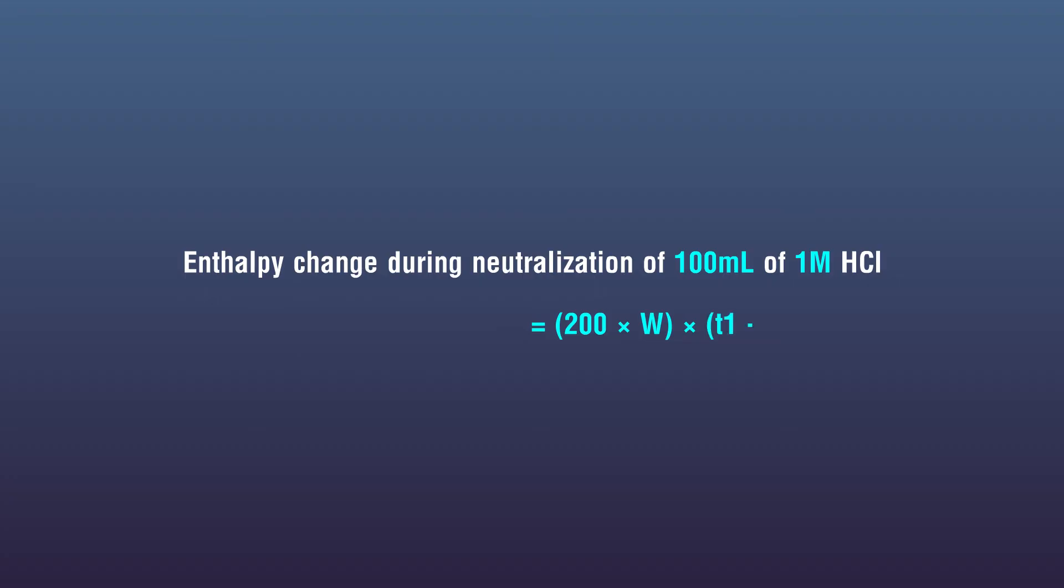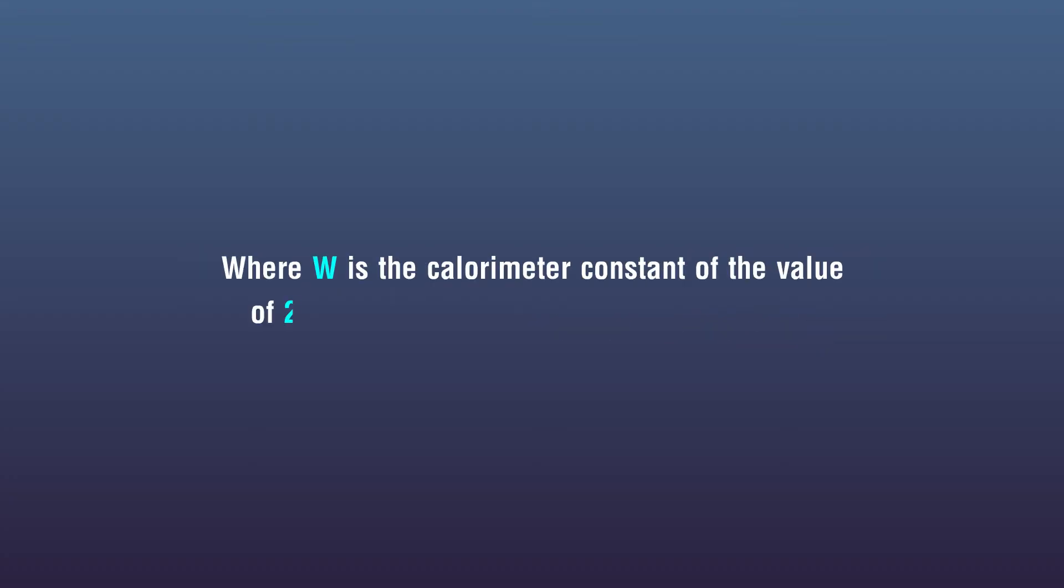Multiplied by T1 minus T2, multiplied by 4.18, where W is the calorimeter constant of the value of 29.1 joules. Value depends on the calorimeter.